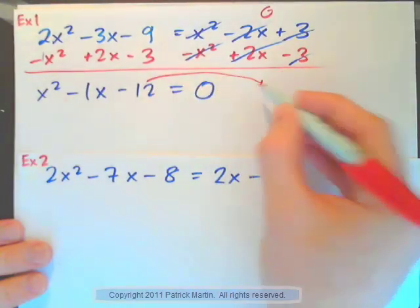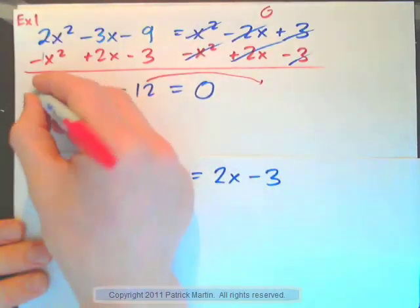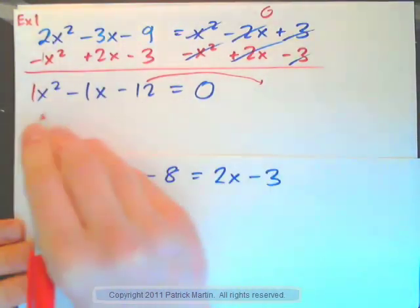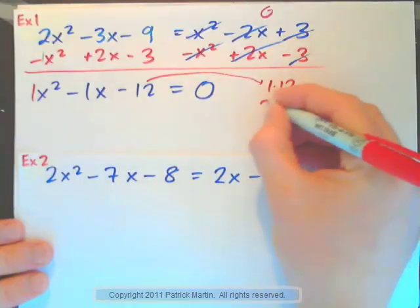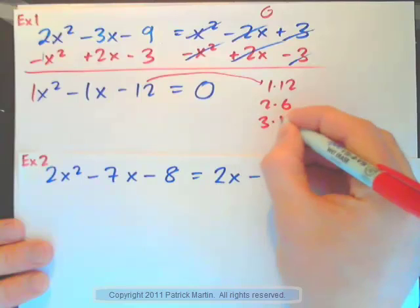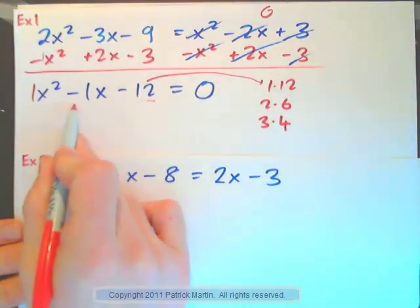Now, I'll do it. List the pairs of factors of 12. This is the short method, by the way, because we just have a 1x squared. So, short method. So, pairs of factors of 12. 1 times 12, 2 times 6, 3 times 4.